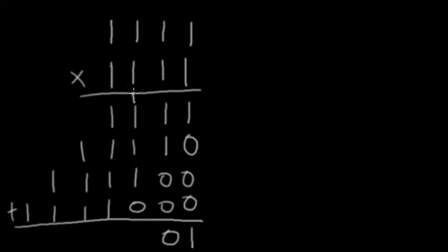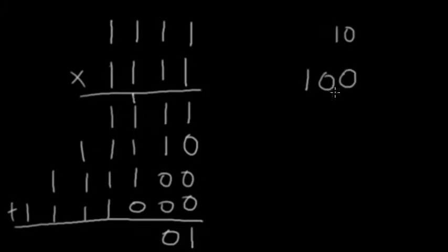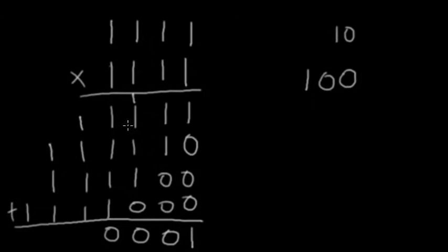We have 1 plus 1 which is 2, and 2 in binary is 10, so we put the 0 down and carry the 1. In some columns we have four ones — 4 in binary is 100, so we put the 0 down and carry the 1. That carried 1 then goes to the next column. We repeat this carry process across each column: four and zero gives us 100, so the zero goes down and the one carries forward.